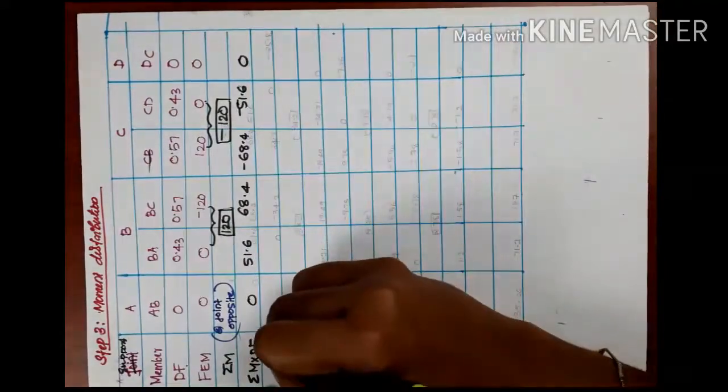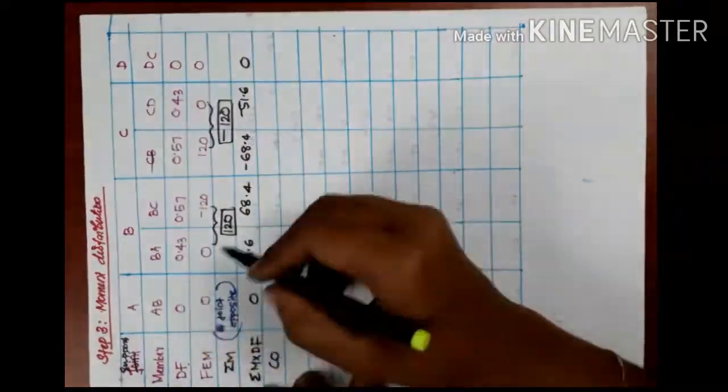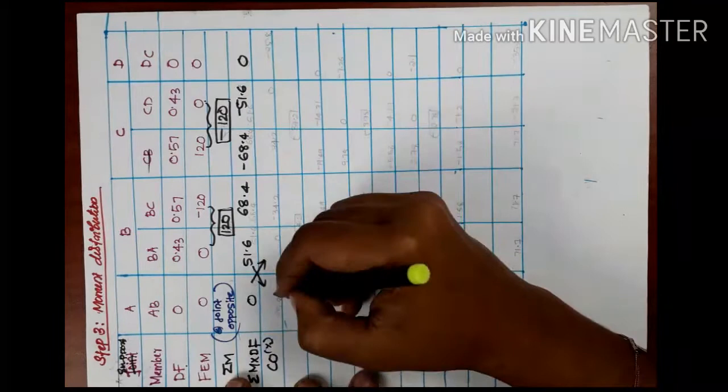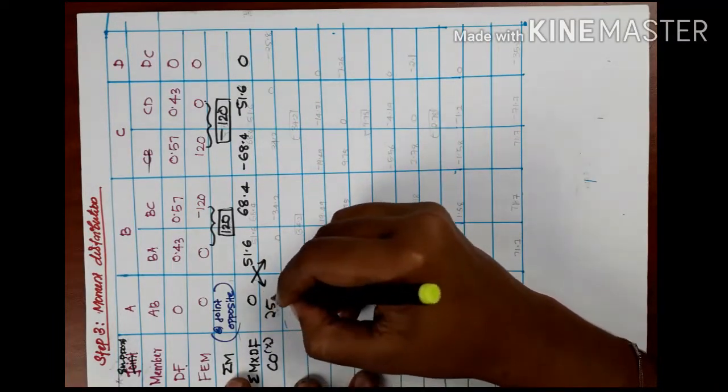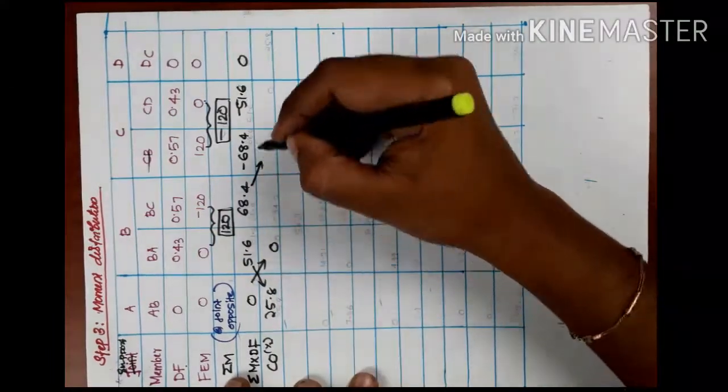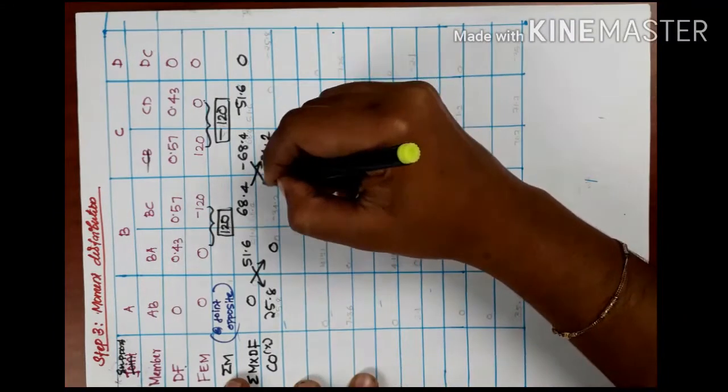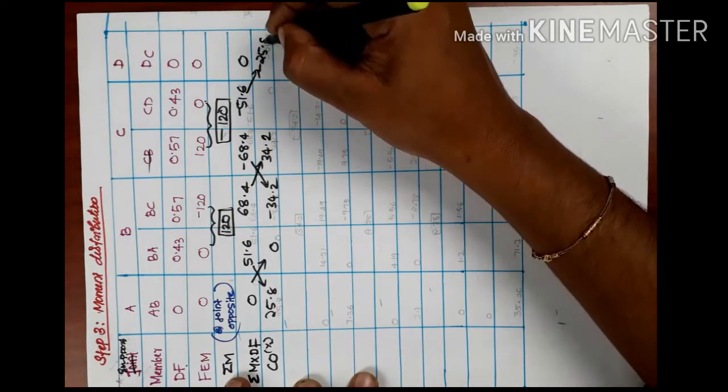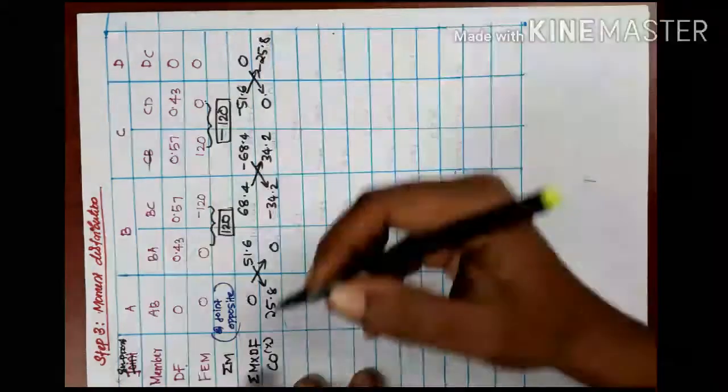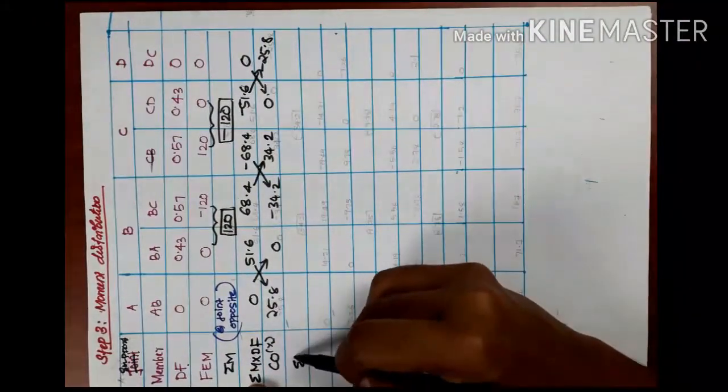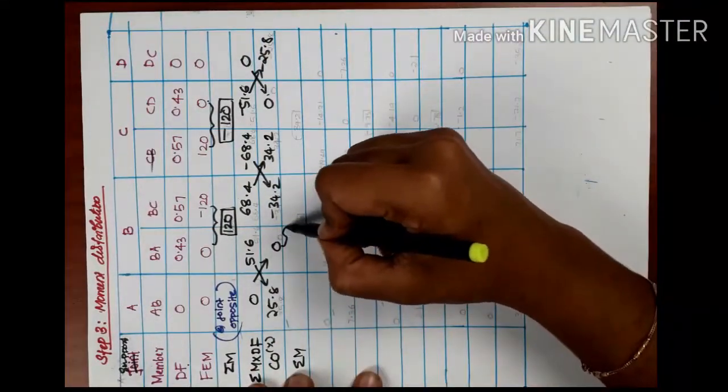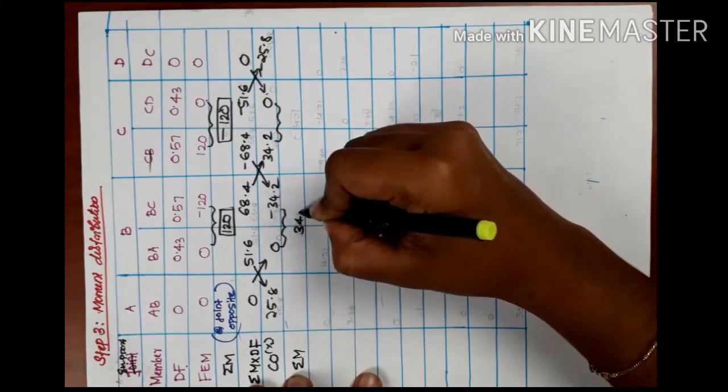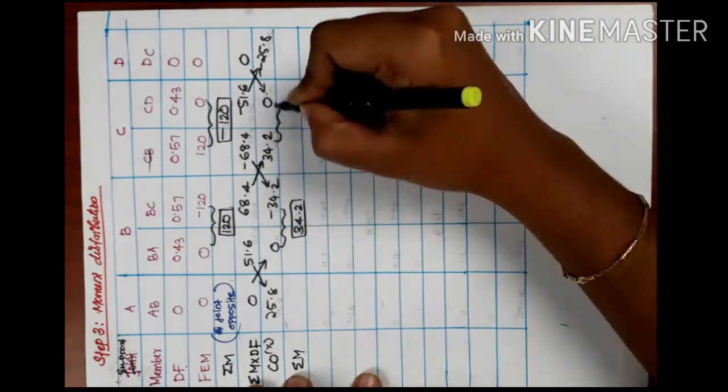The next step is to carry over half value. 51.6 gives 25.8, we get 34.2, minus 34.2, minus 25.8. Again we do the same. When it comes down to this margin, minus 34.2 becomes plus 34.2, then we will add.